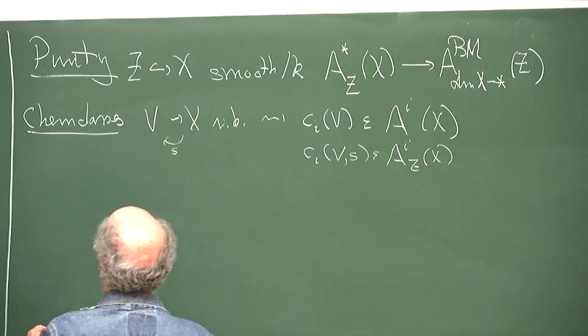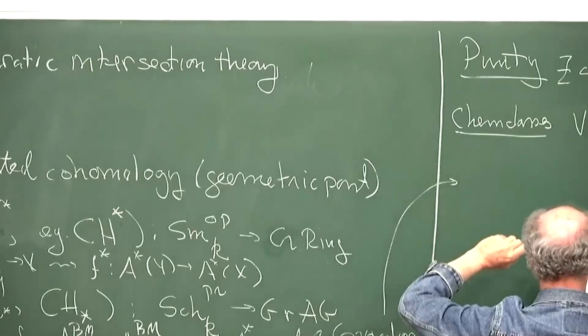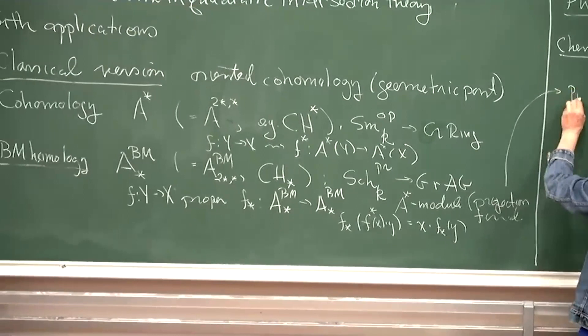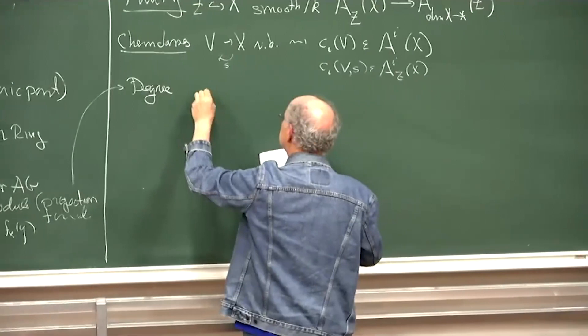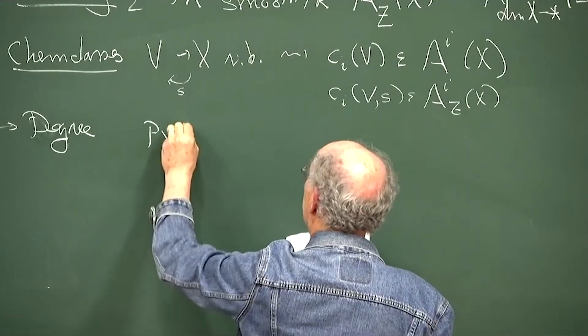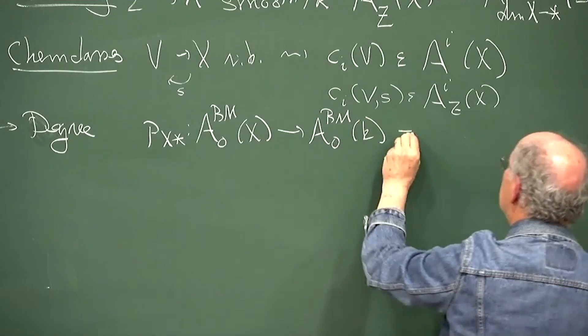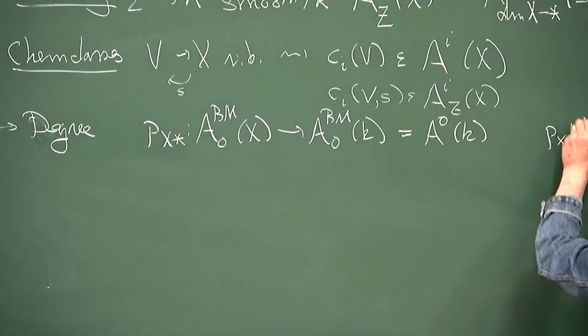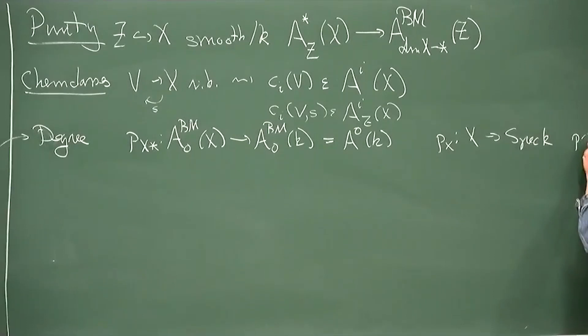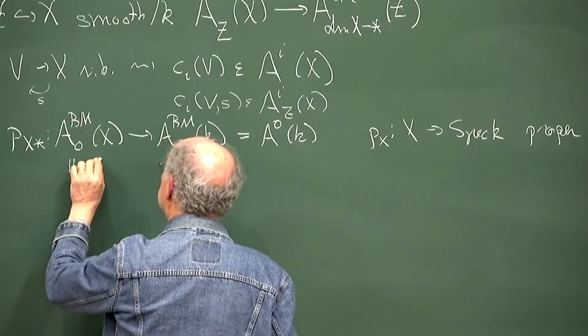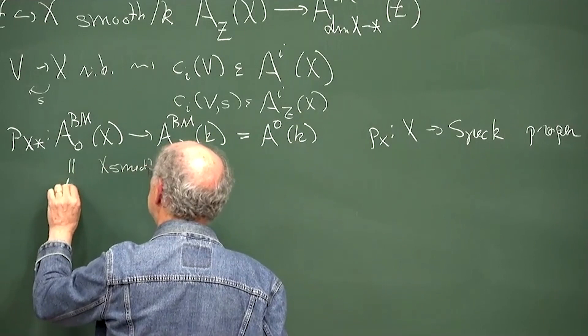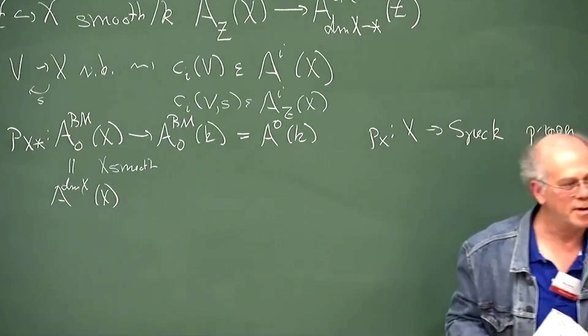From these push-forward maps, a particular case is the degree map — this is how you count things. If you have your structure map p_X, you can take the push-forward from Borel-Moore in dimension 0 on X to Borel-Moore in dimension 0 on Spec K, which by purity is just this object here, and this is for X to Spec K proper. If X is also smooth and proper, then this would be the codimension-dimension-of-X piece, and that's very often how you get these things.